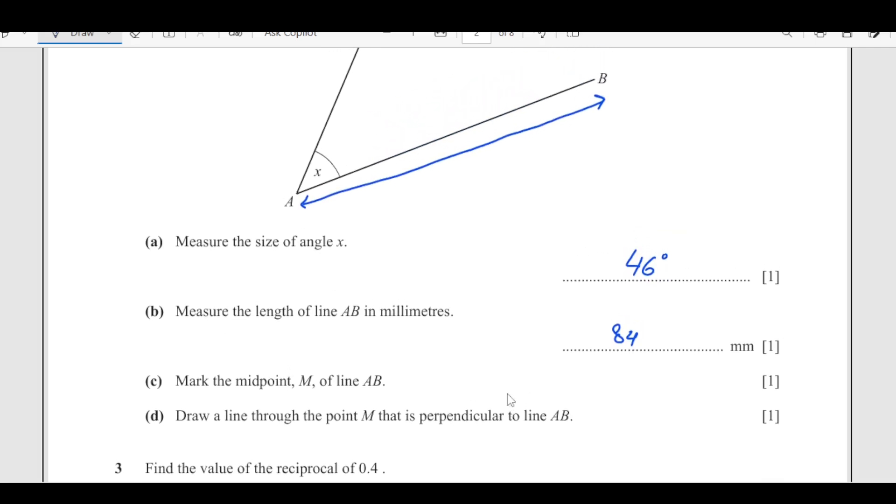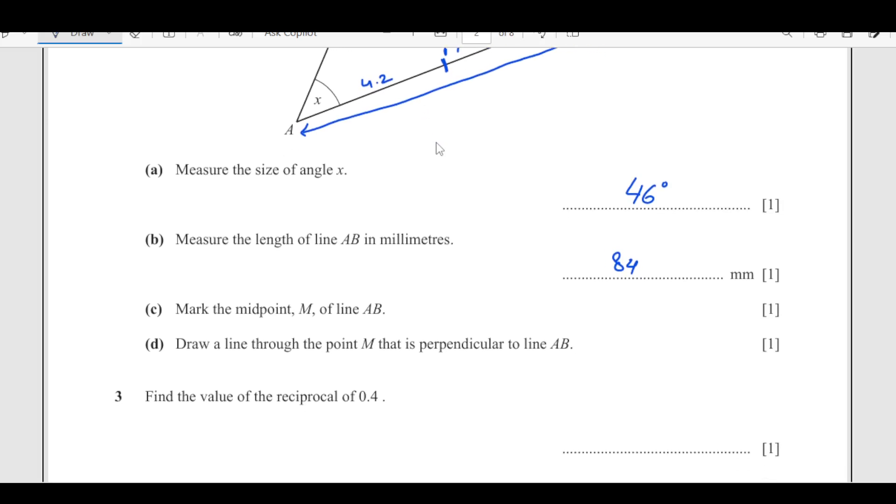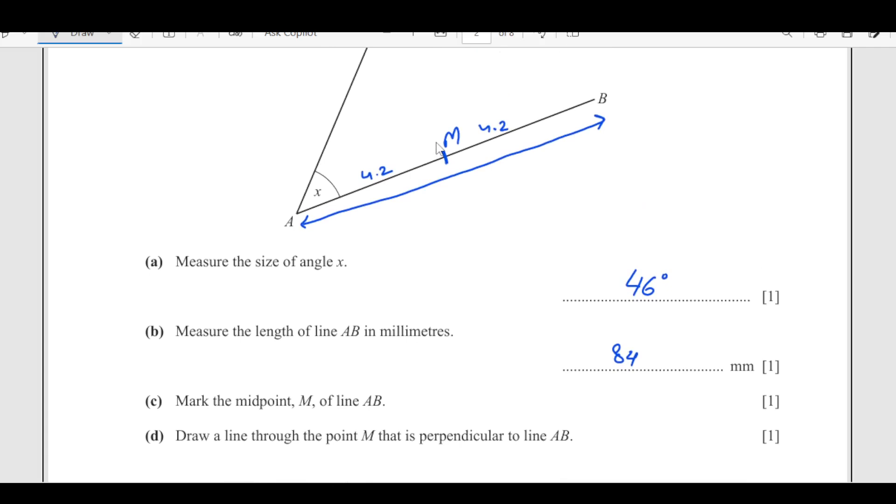Mark the midpoint of the line. Then you take the midpoint in the middle, that will be 4.2 and mark it as M. Draw a line through M that is perpendicular to line AB. You put your set square here, then you can draw a line which is at angle of 90 degrees.